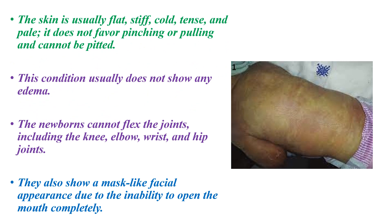The skin is usually flat, stiff, cold, tense, and pale. It does not favor pinching or pulling and cannot be pitted. This condition usually does not show any edema, and the newborn cannot flex the joints including the knee, elbow, wrist, and hip joints. They also show a mask-like facial appearance due to the inability to open the mouth completely.